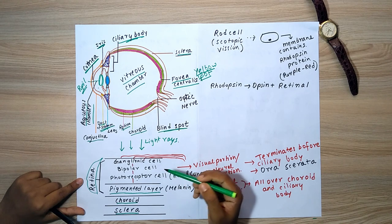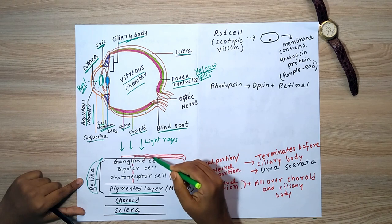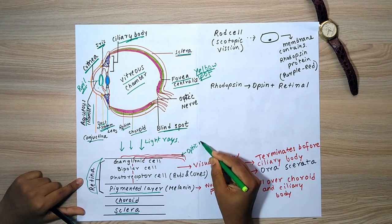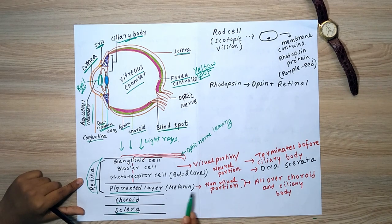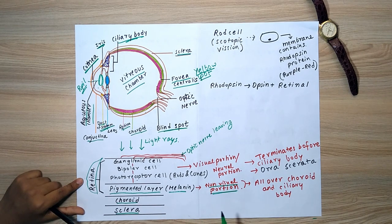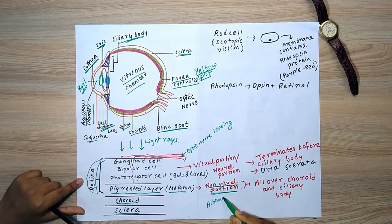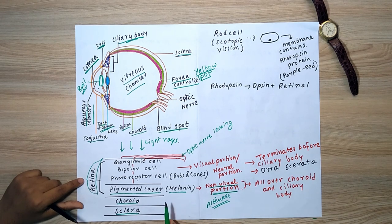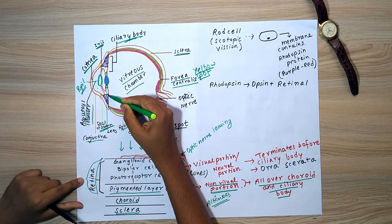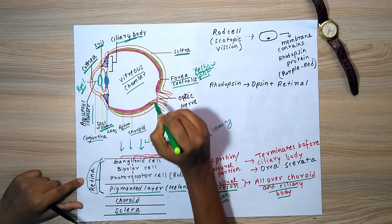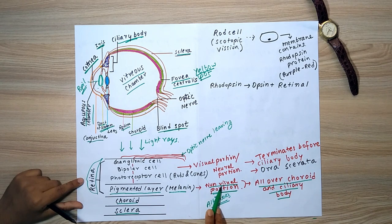The visual portion contains three cell types: photoreceptor cells, bipolar cells, and ganglionic cells. The optic nerve leaves from the ganglionic cells as a bundle of optic fibers. The non-visual pigmented layer is present over the entire ciliary body and choroid. In albinos, melanin is absent from this pigmented layer.